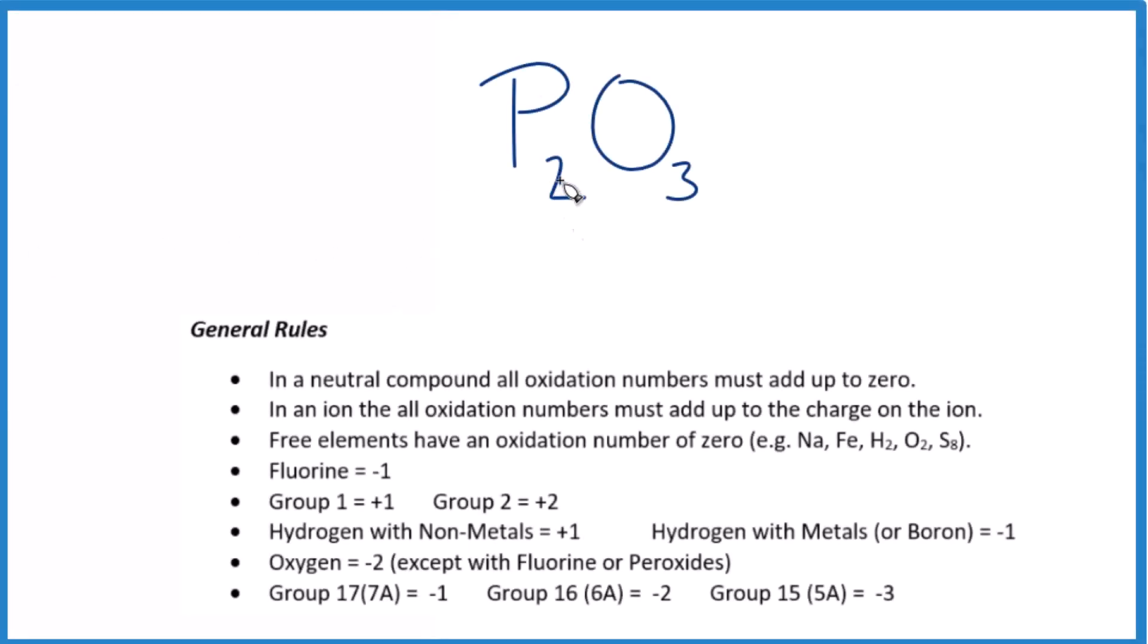Let's find the oxidation numbers for each element here in P2O3. So when we look at this, this is a neutral compound. There's no plus or minus up here. In a neutral compound, all the oxidation numbers are going to add up to zero.